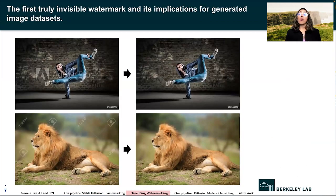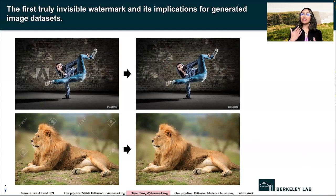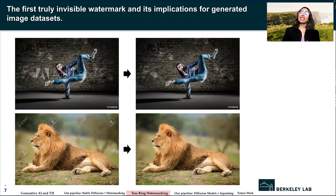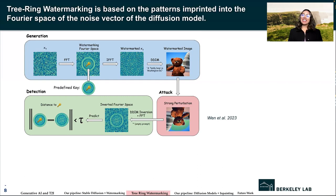A paper recently by Wen in 2023 shows the first truly invisible watermark — meaning there are no post-hoc modifications to the image. Instead, an image is drawn from a modified distribution of generated images that are imperceptibly modified. This way the actual sample carries no watermark in the classical additive sense, but an algorithmic analysis of the image can detect the watermark with high accuracy. This materializes in minor changes in the potential layouts of a generated scene — foreground or background — that cannot be distinguished from other random samples by human inspection. This approach, called tree ring watermarking, is based on patterns imprinted into the Fourier space of the noise vector of a diffusion model, which can be easily incorporated into existing diffusion models and is invisible on a per-sample basis.